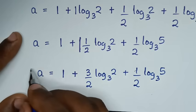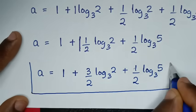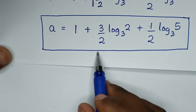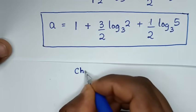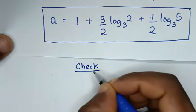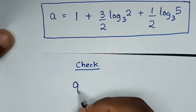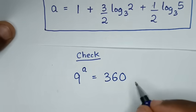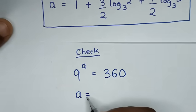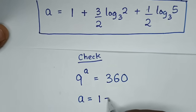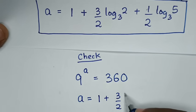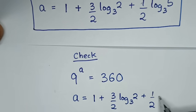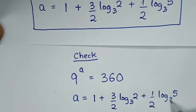So this is the final answer for the value of a, which is the simplified form. Now in the next step, let's check this answer if it is correct. From our problem, which is 9 power of a is equal to 360, where a is equal to 1 plus 3 over 2 log of 2 base 3 plus a half log of 5 base 3.